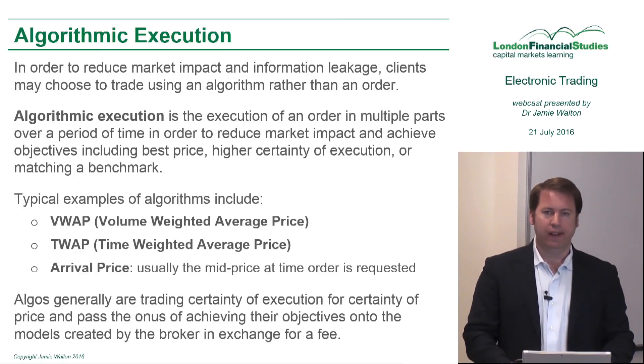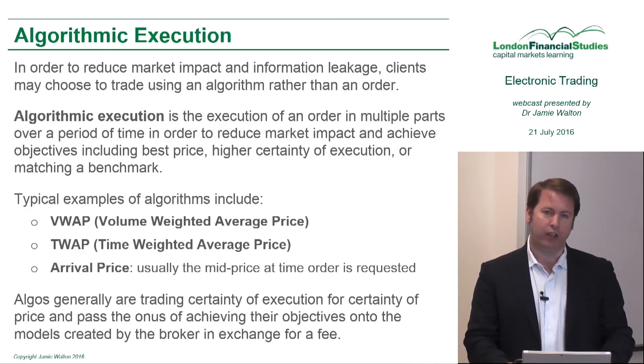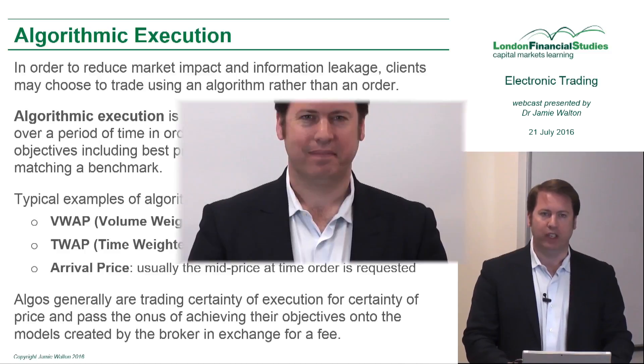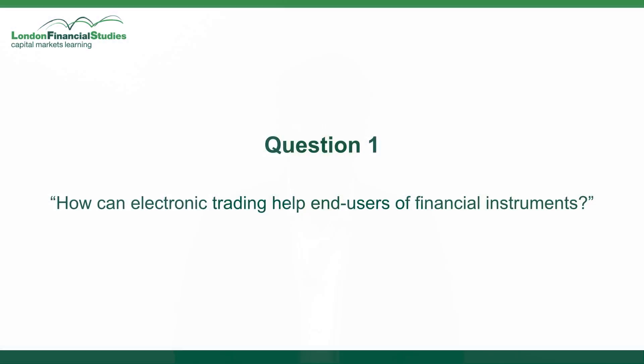Both of these concepts — the concept of market impact — leads us nicely into the concept of algorithmic execution. We'll start with the first audience question from Jamie: how can electronic trading help end users of financial instruments? So for end users, the main benefit of electronic trading is transparency — transparency of price and of execution, and being able to observe the marketplace more cleanly.